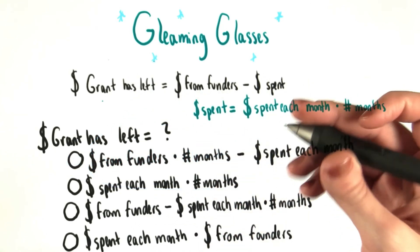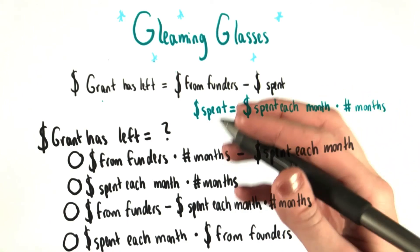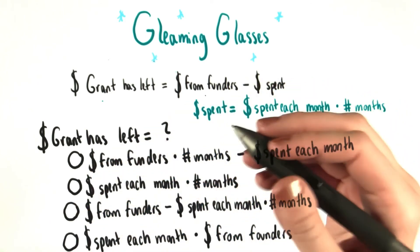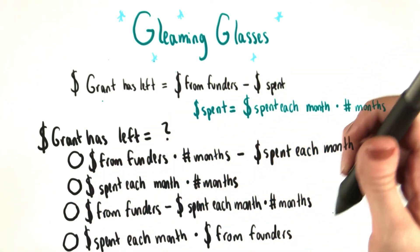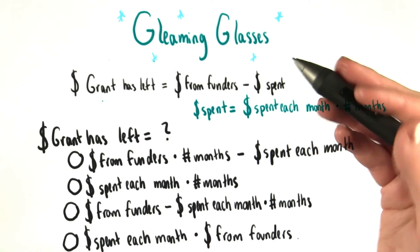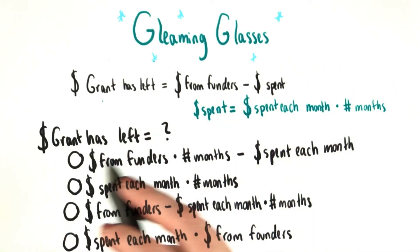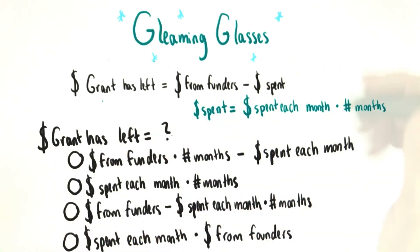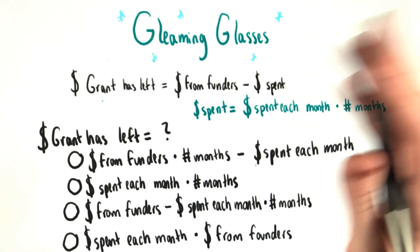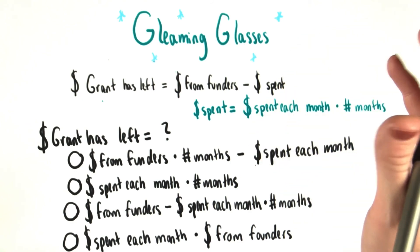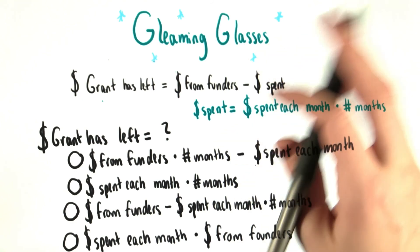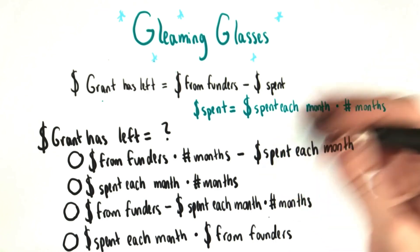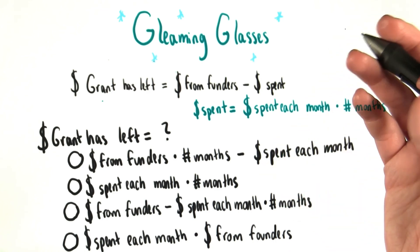Taking this idea of substituting in values for other things that we know they're equal to, which answer down here would give us another way of writing out how much money Grant has left? I know that there's a lot of writing to have on the screen at one time, so not a problem at all if this looks confusing. Just give the quiz a try, and we'll see what happens!